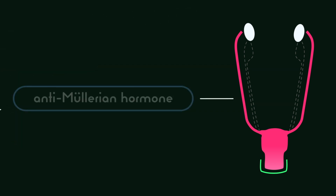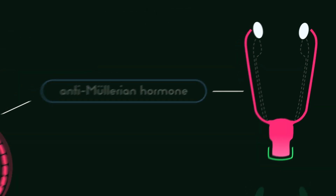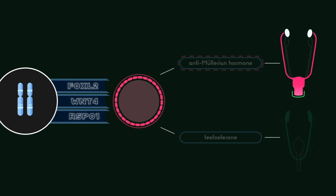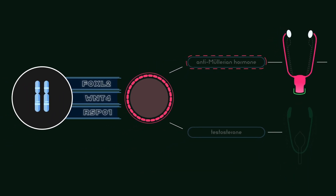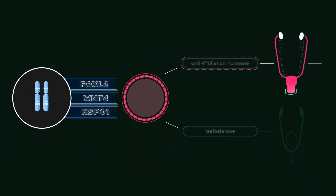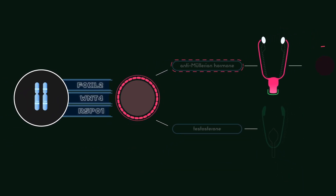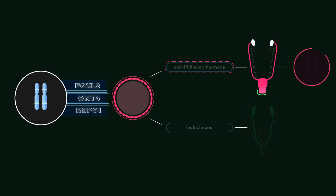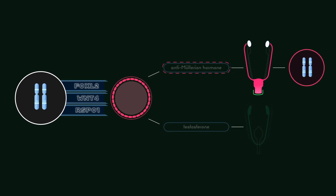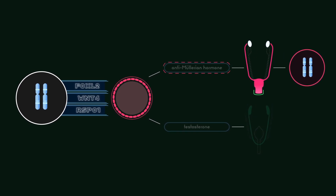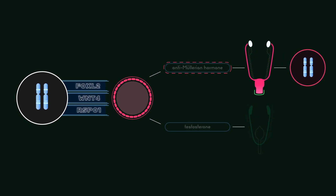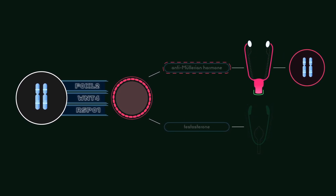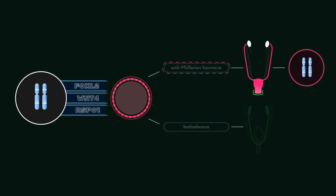However, with no SRY activation and no anti-Müllerian hormone, the fetus still develops anatomy to support the production of large gametes. Thus, newborns with 46XX CAH are females.